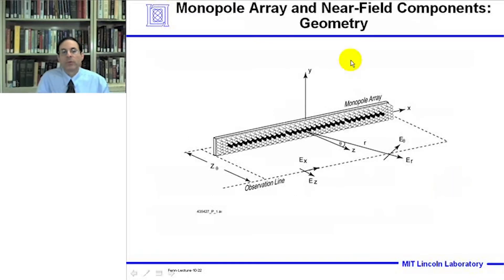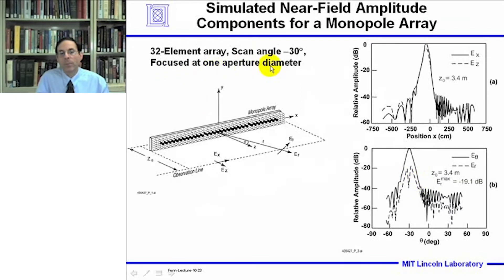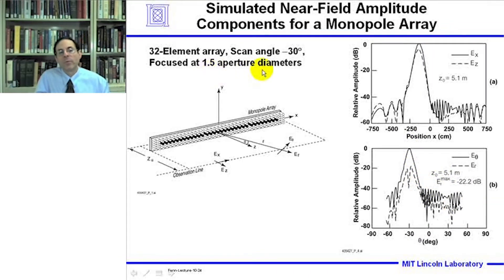This slide shows the geometry for the monopole array and near-field components. We'll be looking on the observation line in front of the array at the e-z and e-x components, as well as the radial e-r and e-theta components. For focus at one aperture diameter, the e-x and e-z components are very similar. Converting these rectangular components to e-theta and e-r over angle, the radial component is 19.1 dB down from the e-theta component. Moving to 1.5 aperture diameters, again e-x and e-z are similar, though e-x is stronger than e-z, and now the radial component is down by minus 22.2 dB from the e-theta component. As we move farther from the array, the radial component gets weaker.